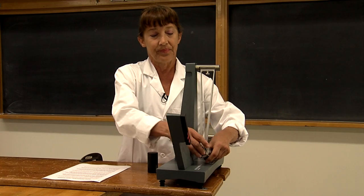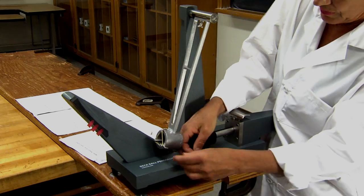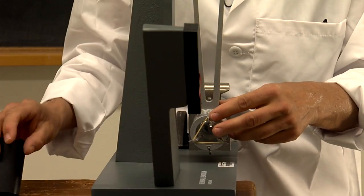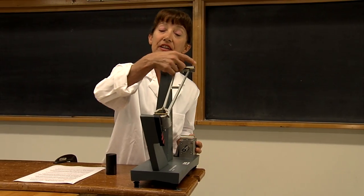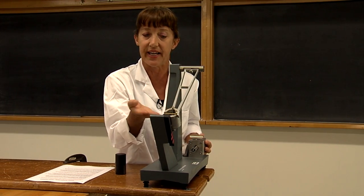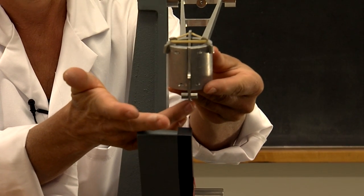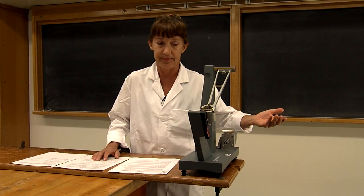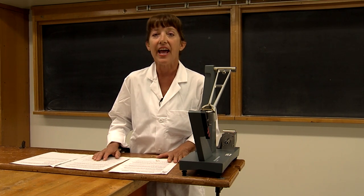For the first method, the projectile is launched and collides with the pendulum. As you can see, the pendulum arm is pinned here — this restricts its motion, allowing it only to rotate upward. On the bottom of the pendulum cup is a ratcheting mechanism, which prevents it from sliding back down after it has reached its apex.